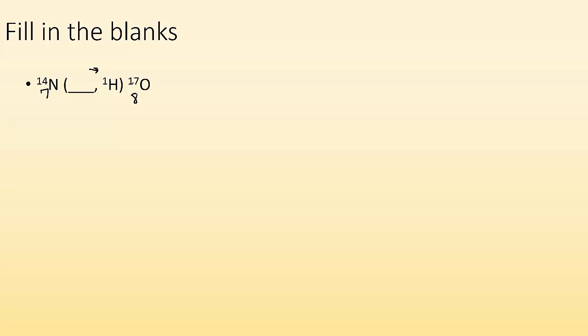What's missing here? Well, 1 and 17 gives me 18, which means my mass, missing mass, has to be 4. And 7 is going to equal 1 and 8. So my missing charge is 2, which tells me that it is an alpha particle.